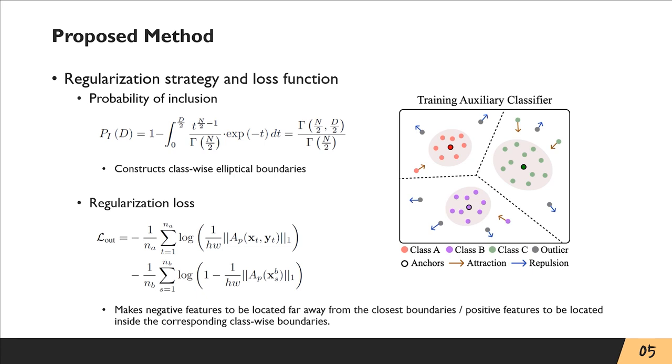Then, we design a regularization loss that can make negative features to be located far away from the closest boundaries, and positive features to be located inside the classwise boundaries.